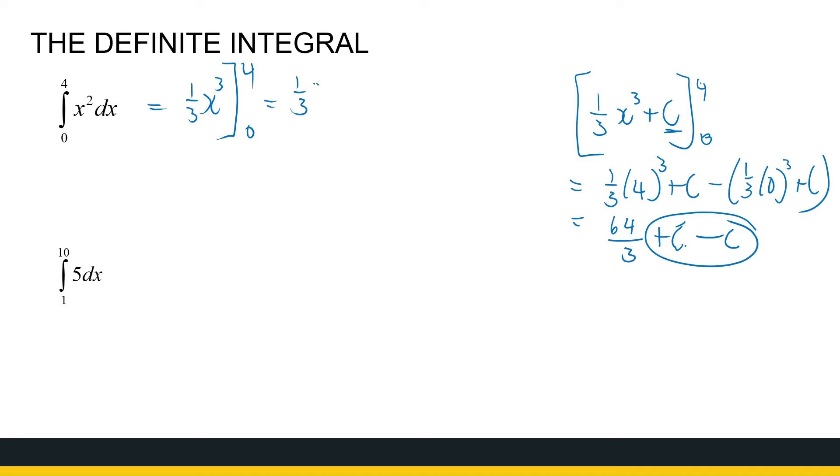So what we do is we don't even take the constant into consideration when we do our calculations. We just say it's that between 4 and 0. So that's a third times 4 to the power 3 minus a third times 0 to the power 3, which is 64 over 3. So this is just showing you why the c is not ignored, but practically it's ignored.